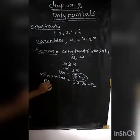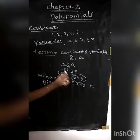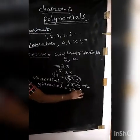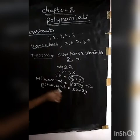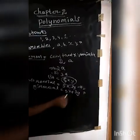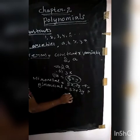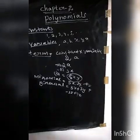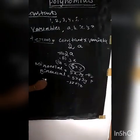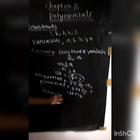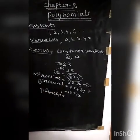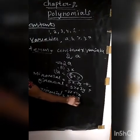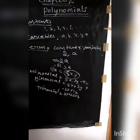Next, binomials. Binomial means two terms — for example, 5X plus 3Y, or minus 3Z plus 4Z. That is called a binomial. Next, three terms — for example, 3Y plus 2Z plus 3. That is called a trinomial.